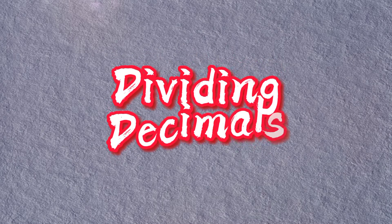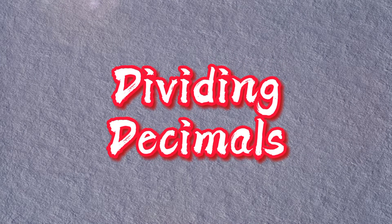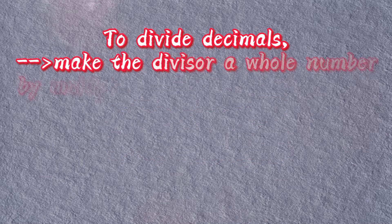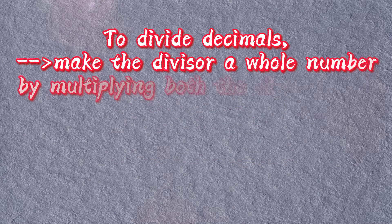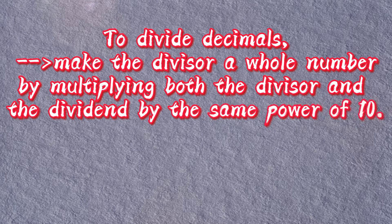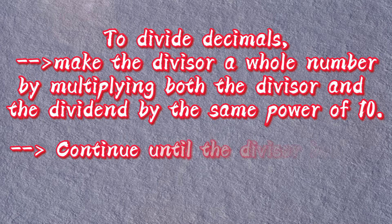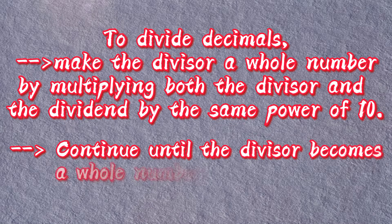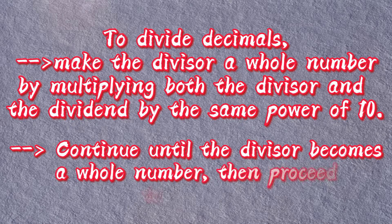Let's have dividing decimals. To divide decimals, make the divisor a whole number by multiplying both the divisor and the dividend by the same power of 10. Continue until the divisor becomes a whole number. Then, proceed to division.